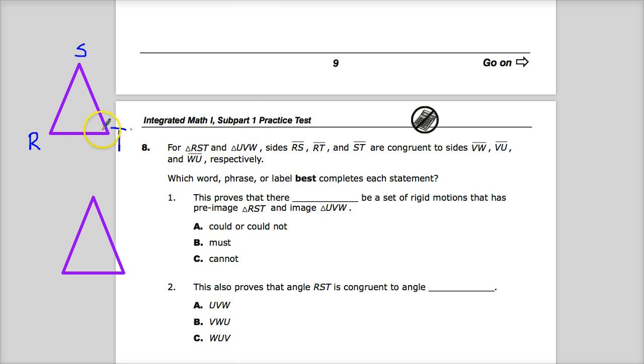So what I'll do is mark RS with one little mark to indicate it's a specific length. I don't need to know exactly what it is in this question. It tells me my corresponding side would be VW.